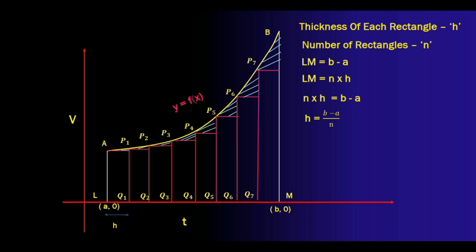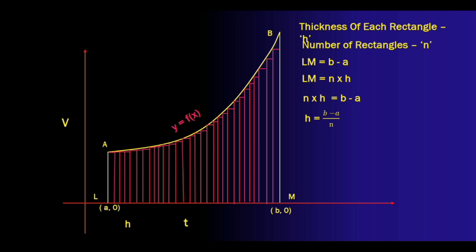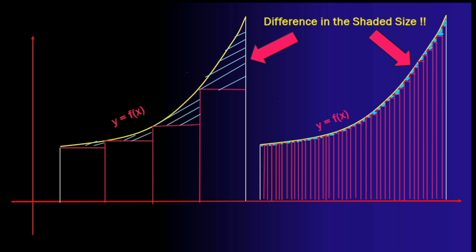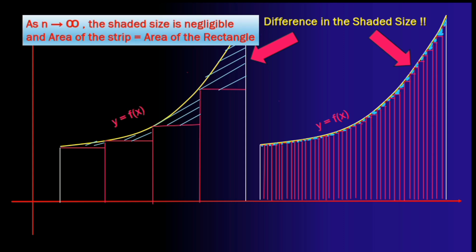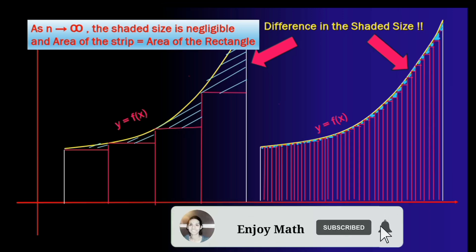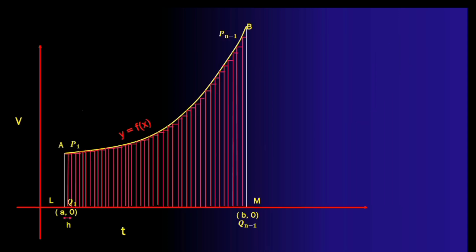So what happens? The thickness of each rectangle automatically has to reduce and thankfully the area of the shaded region is also reducing. So what do we do? Let us divide the same region into even more number of rectangles. Did you notice the difference in the size of the shaded areas? Now the size of the shaded area has reduced to a great extent and as the number of rectangles tends to infinity the shaded area will be negligible and we can safely say that the area of the strip is equal to the area of the rectangle.